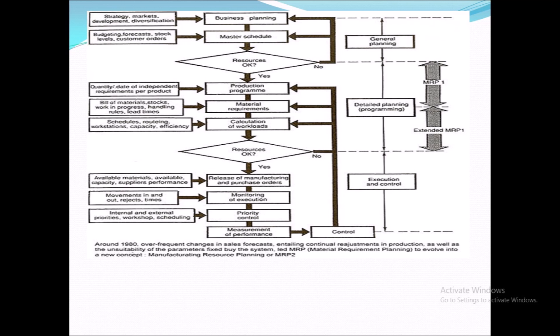The third level is execution and control, where manufacturing orders are released and executed. You monitor timely what to control, where there are delays, whether movement is happening properly, and whether quality standards are met. Finally, you measure performance — whether you achieved the standard you set. If not, you apply control and change your execution accordingly.